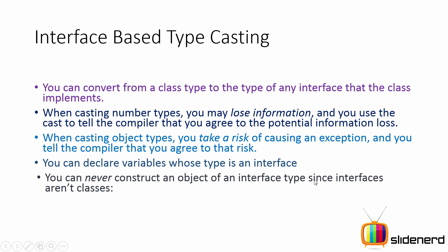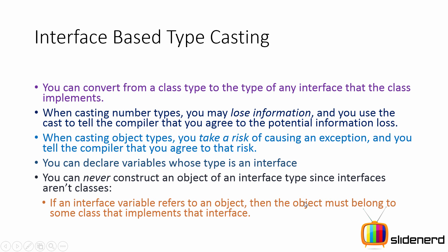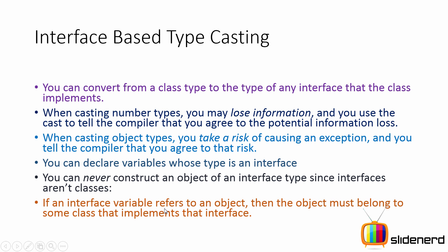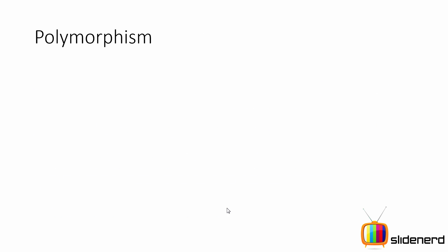You can declare variables whose type is an interface. Of course, you cannot create an object because interfaces are not exactly classes, right? And of course, if an interface variable refers to an object, then that means the object must belong to some class that implements the interface, which we saw previously where our measurable interface had a rectangle object being passed in.